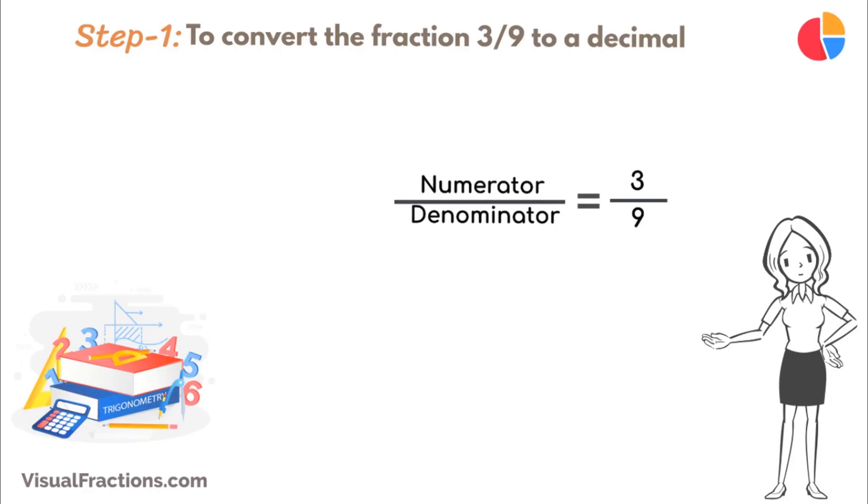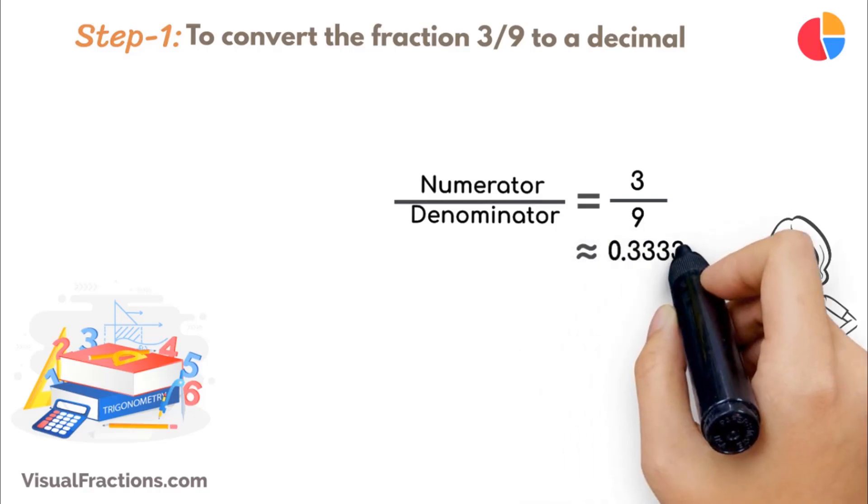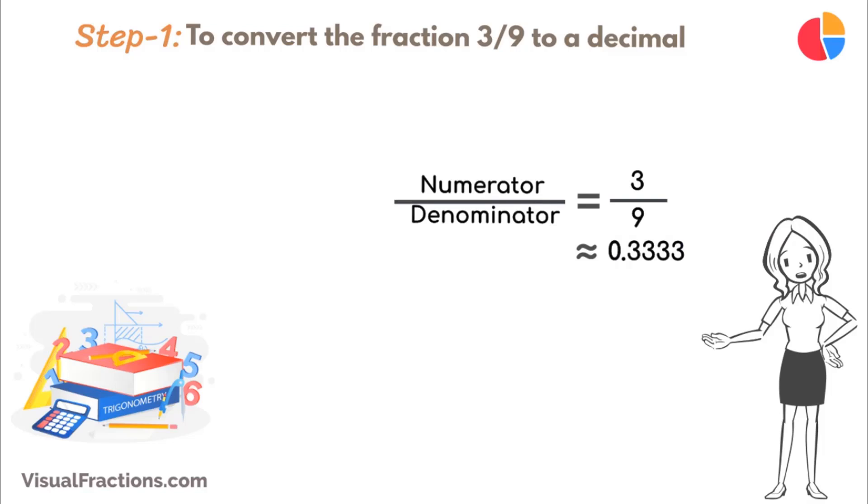Using a calculator, the answer we get is approximately 0.3333, which is a repeating decimal. But let's perform this division by hand using long division.